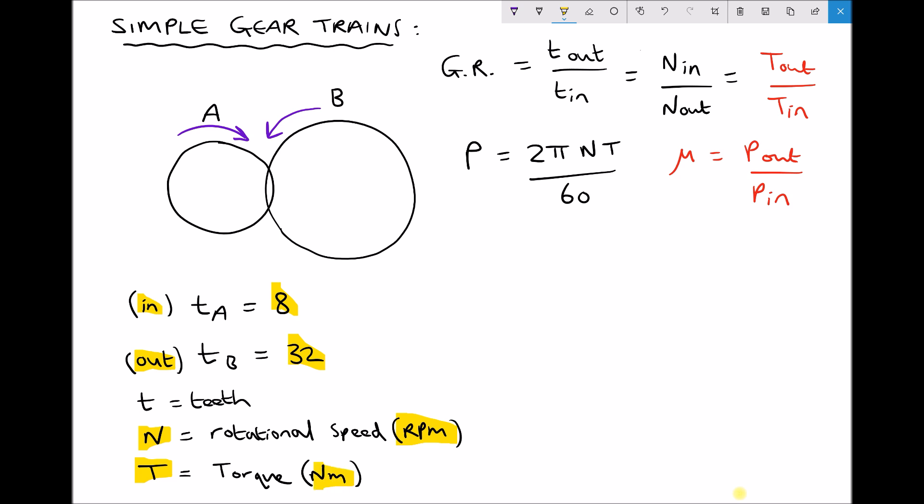In the top right hand corner we have some equations that apply to gears, and the first one is for gear ratio. There's a number of different ways of calculating gear ratio, and one of them is using the number of teeth on the output divided by the number of teeth on the input.